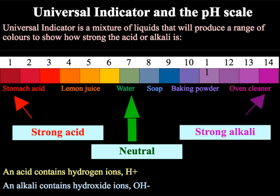When examining whether a liquid is an acid or an alkali, we can use the pH scale. Universal indicator can be used to give a clear range, from very strong acids at pH 1, 2 and 3 up to very strong alkalis at pH 13 to 14, with water which is neutral in the middle. All acids contain hydrogen ions (H⁺), whereas alkalis contain hydroxide ions (OH⁻).